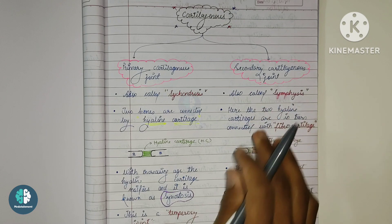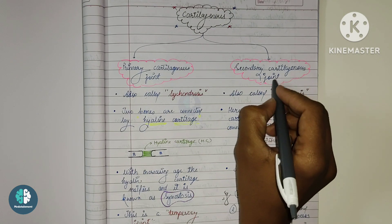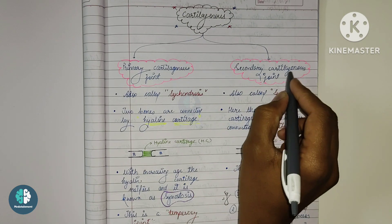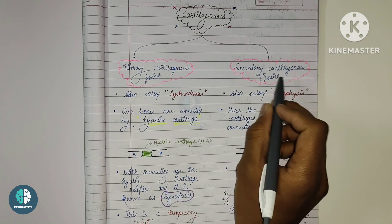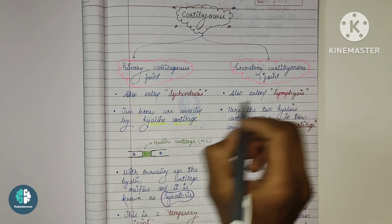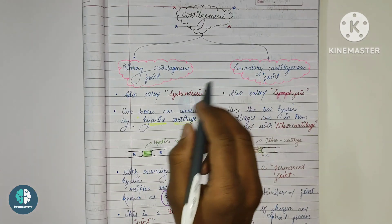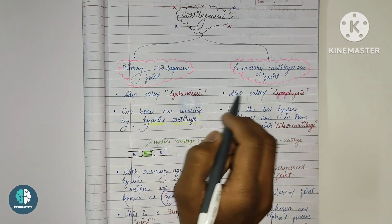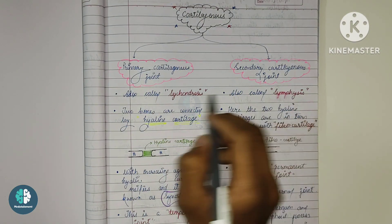All the symphysis joints are actually located in the center of the body. That is why we have seen the term pubic symphysis — it comes in the middle or center of the body. So we have seen that primary and secondary are also known as synchondrosis and symphysis respectively.